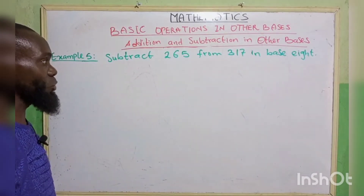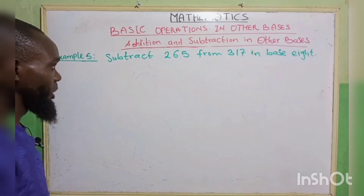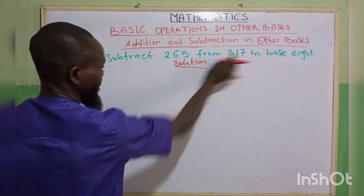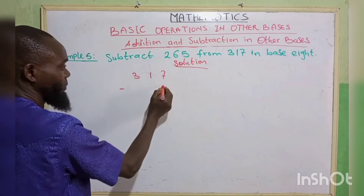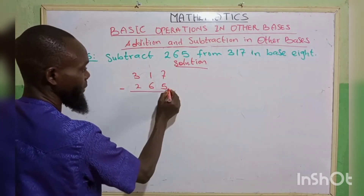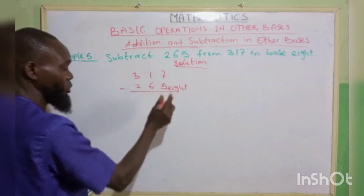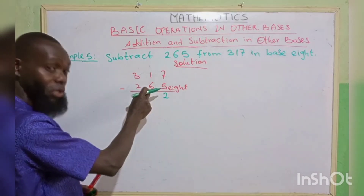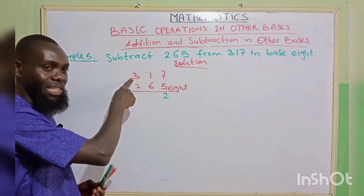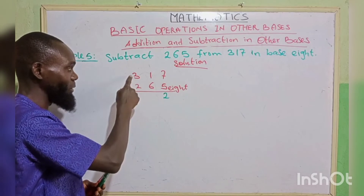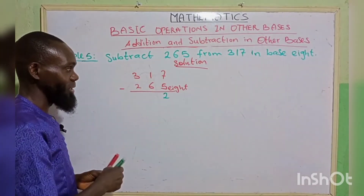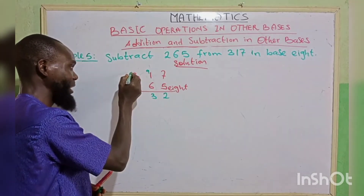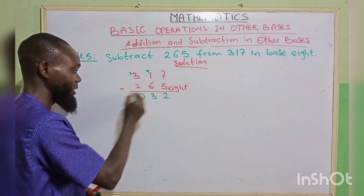Example 5: subtract 265 from 317 in base 8. We write 317 minus 265 in base 8. 7 minus 5 gives 2. 1 minus 6 is impossible, so we borrow from 3. The borrowed 1 becomes 8; 8 plus 1 gives 9. 9 minus 6 gives 3. The 3 has now been reduced to 2. 2 minus 2 gives 0. The answer is 032, i.e., 32 base 8.